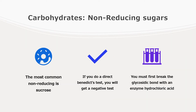With non-reducing sugars, the process is more or less the same, but there's just an additional step. The most common non-reducing sugar is sucrose, which is a disaccharide. If you do a direct Benedict test on sucrose, you will get a negative test result. You have to first of all break the glycosidic bond in sucrose in order to release the sugars so that they can then be tested. You have to break that bond using either an enzyme or hydrochloric acid.